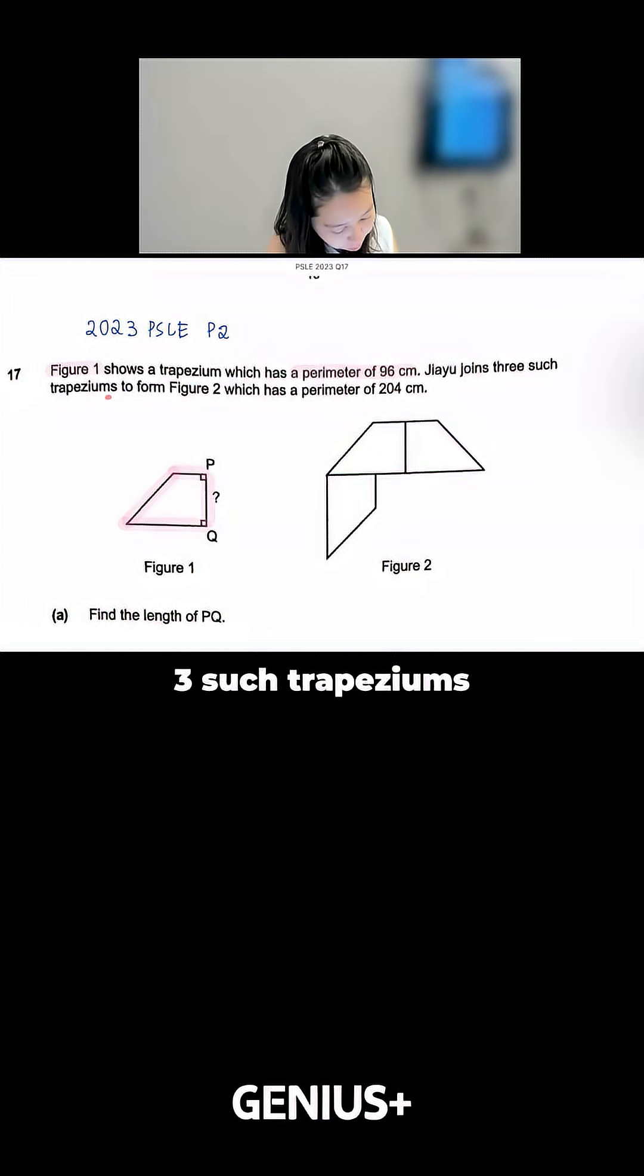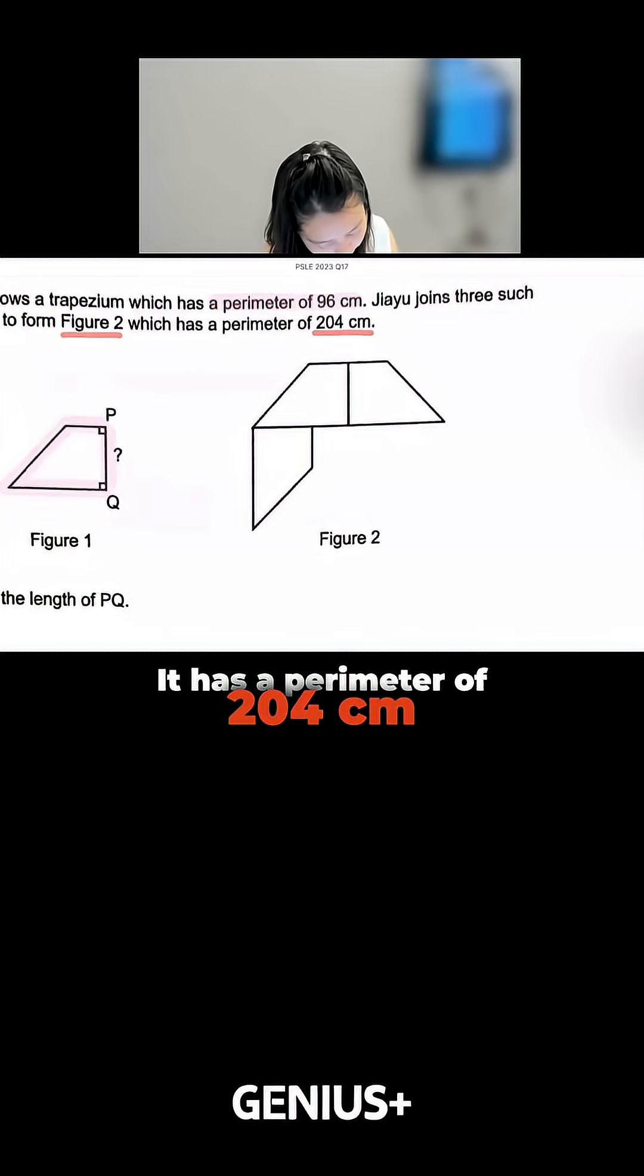And when Jia rejoins 3 such trapeziums to form Figure 2, which is on the right-hand side, it has a perimeter of 204.